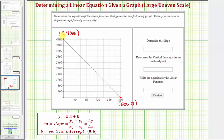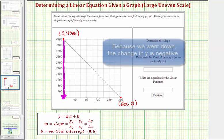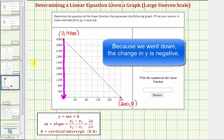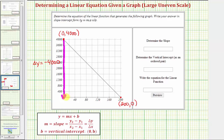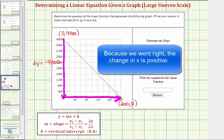So if we wanted to move from this point on the left to this point on the right, notice how we'd have to go down 4,000 units, which means the change in y, or delta y, is equal to negative 4,000. And then we'd have to go right 200 units, which means delta x is equal to 200.